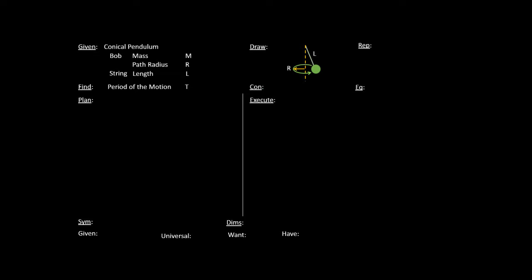For this, we have two choices: either the concept is going to be Newton's first law or Newton's second law. In Newton's first law there's no acceleration. In Newton's second law there is some acceleration. In this case, is there an acceleration? Well, this is moving in a circle. While you're moving in a circle, you have an acceleration that's always pointing towards the center. So if you're not going in a straight line, you always have an acceleration. And so there has to be an acceleration here, which means this is Newton's second law.